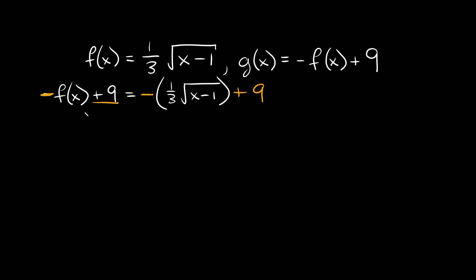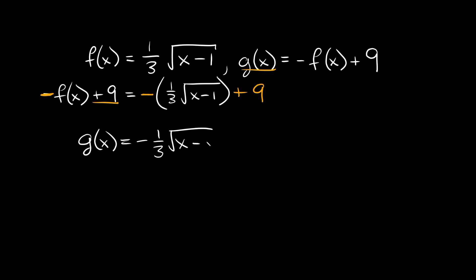Now if we simplify this — this whole thing is just equal to g of x. So g of x is equal to: we distribute the negative sign in, so negative times one-third is just negative one-third. You don't distribute it into the square root, so that stays as the square root of x minus one, and then we just have a plus nine at the very end. So this would be our final answer.